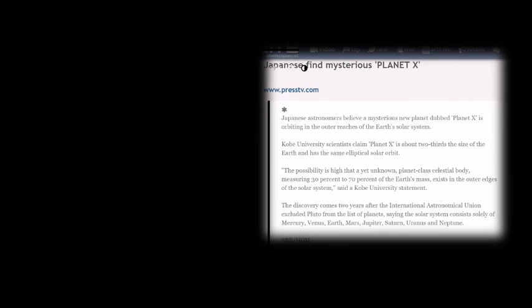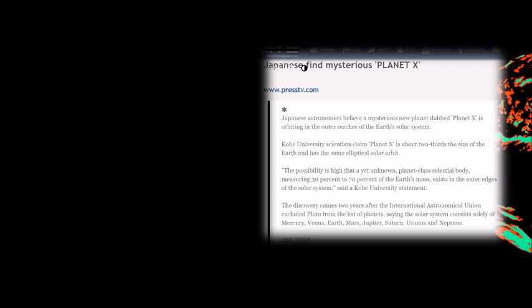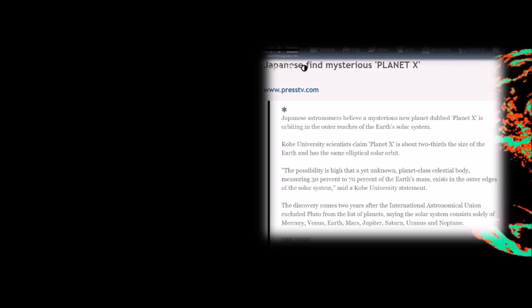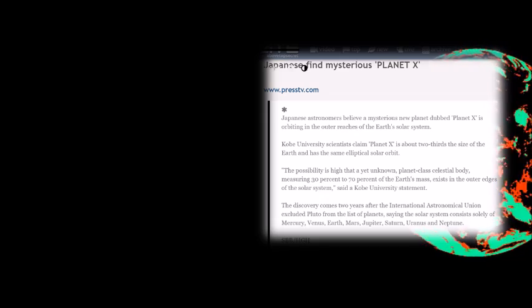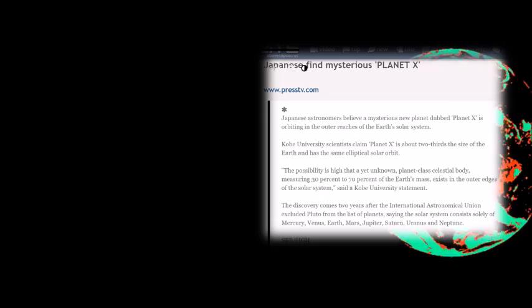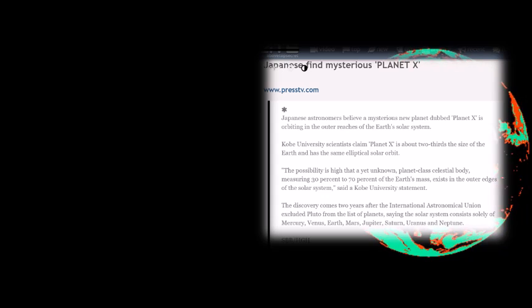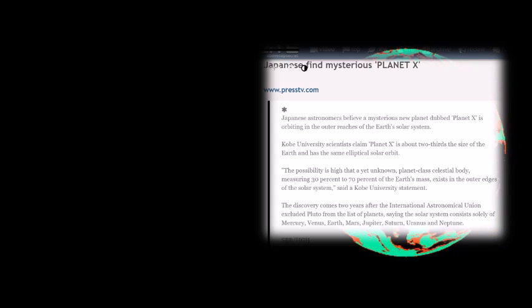In 2008, Japanese researchers announced that an undiscovered planet 100 astronomical units away and two-thirds the size of Earth could be the planet X according to their calculations. However, mainstream laughed at every planet X theory and every scientist that dared to bring that up.